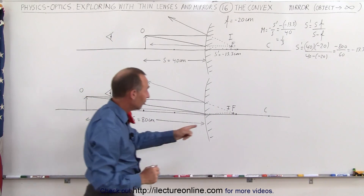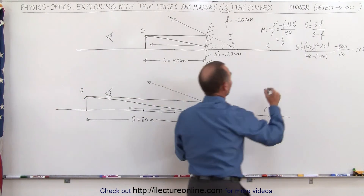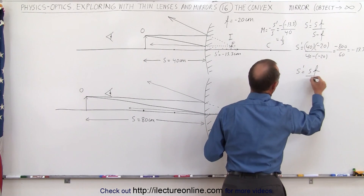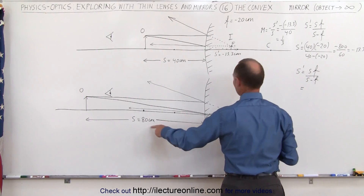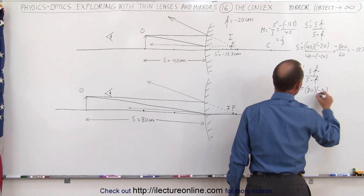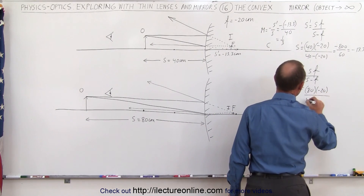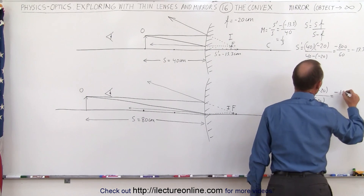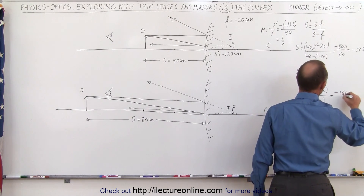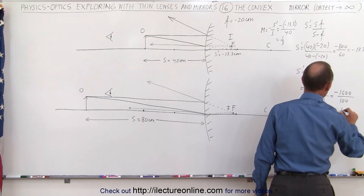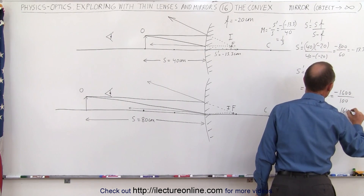Now let's find the image distance for this case. S prime equals S times F over S minus F. S is 80 centimeters: 80 times minus 20 divided by 80 minus a minus 20, which equals minus 1600 divided by positive 100, which is minus 16 centimeters.